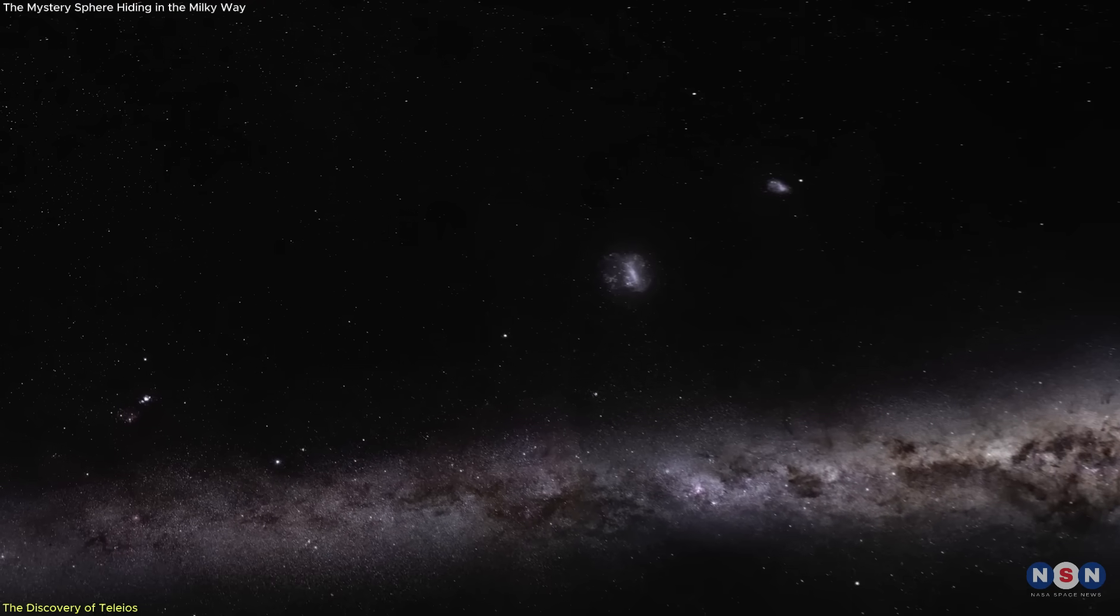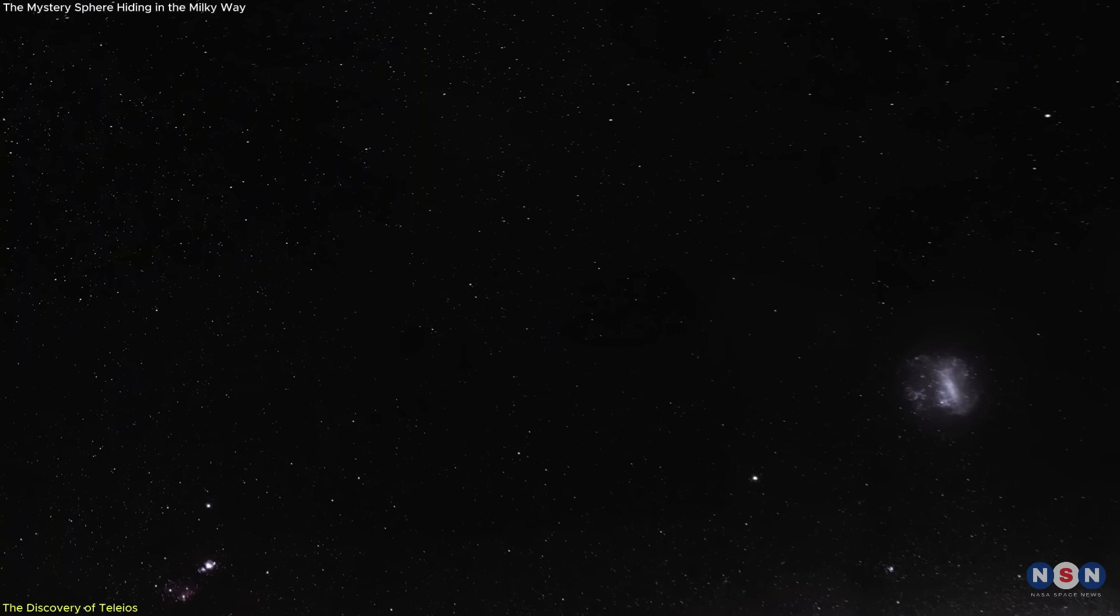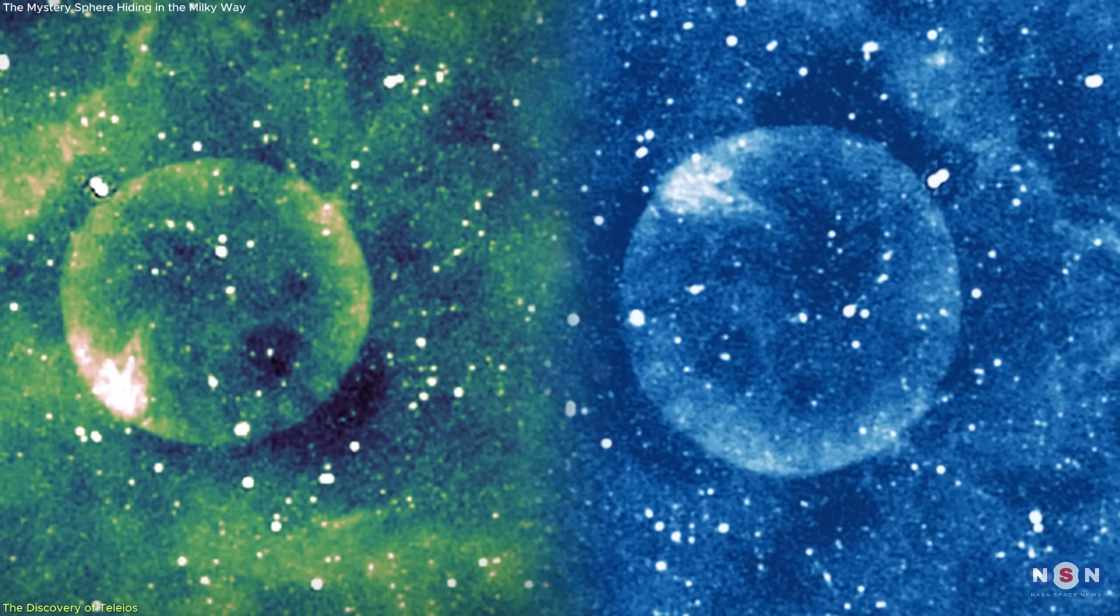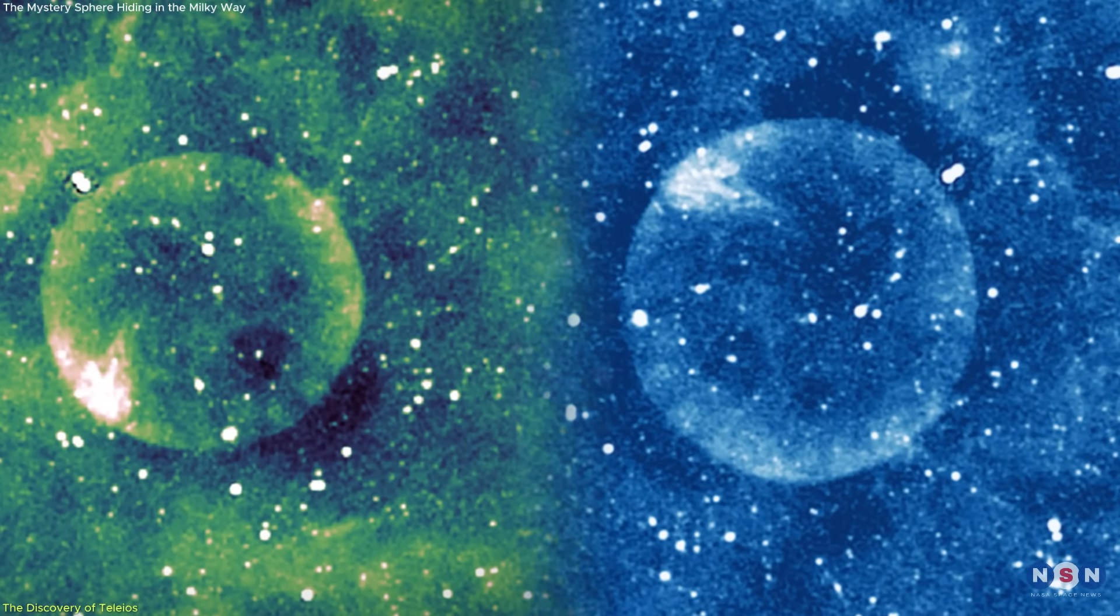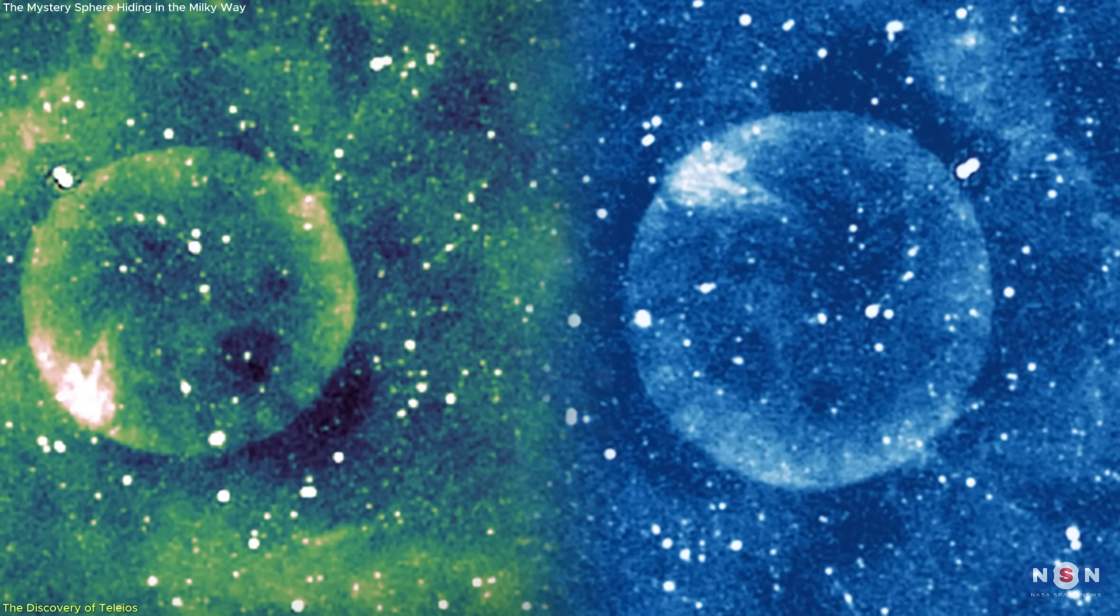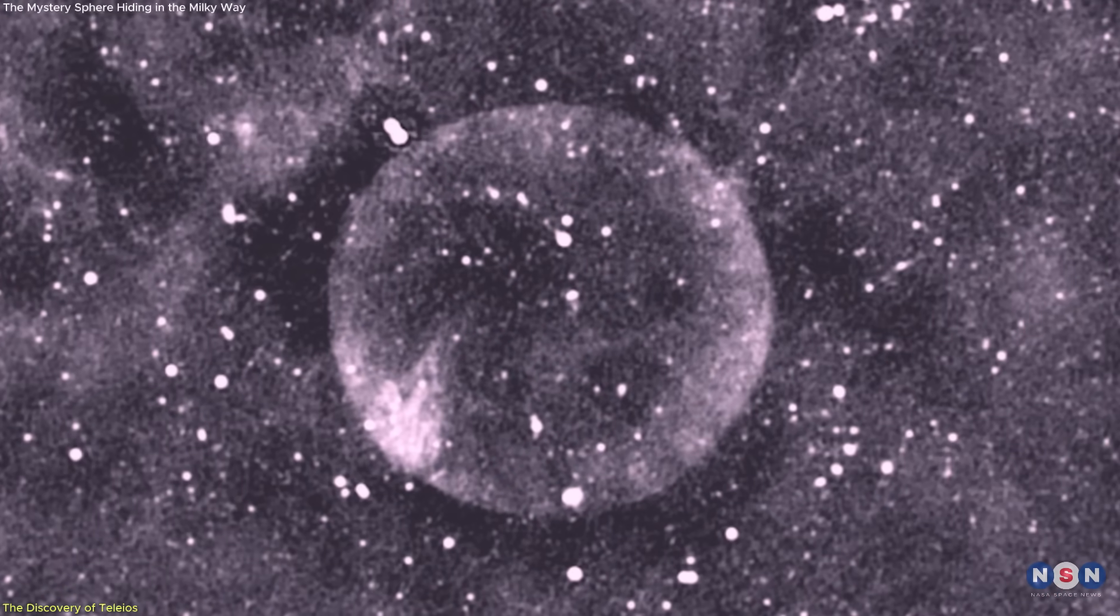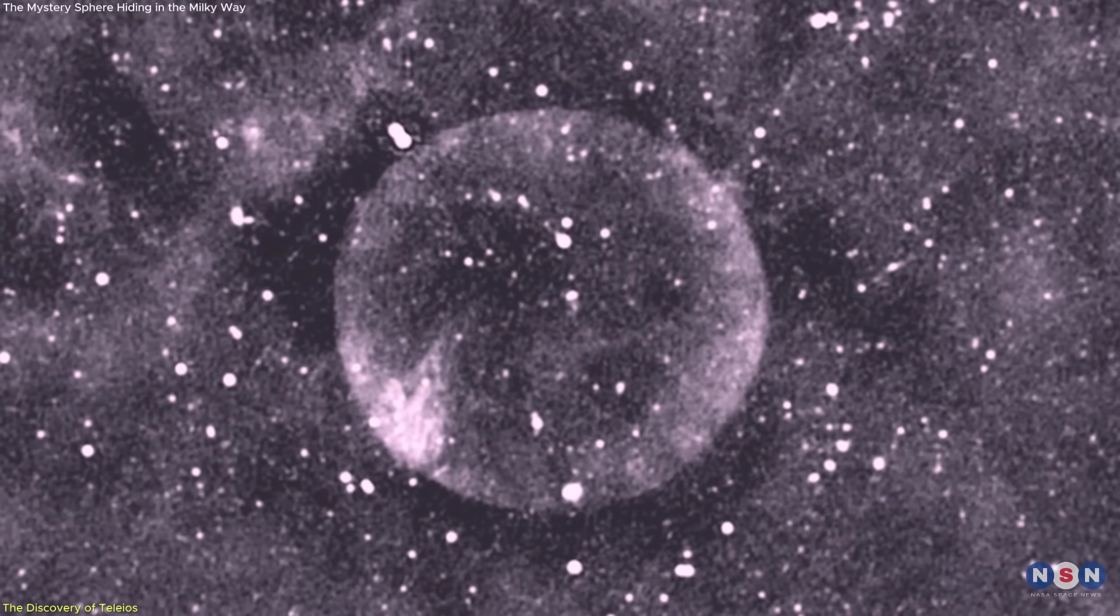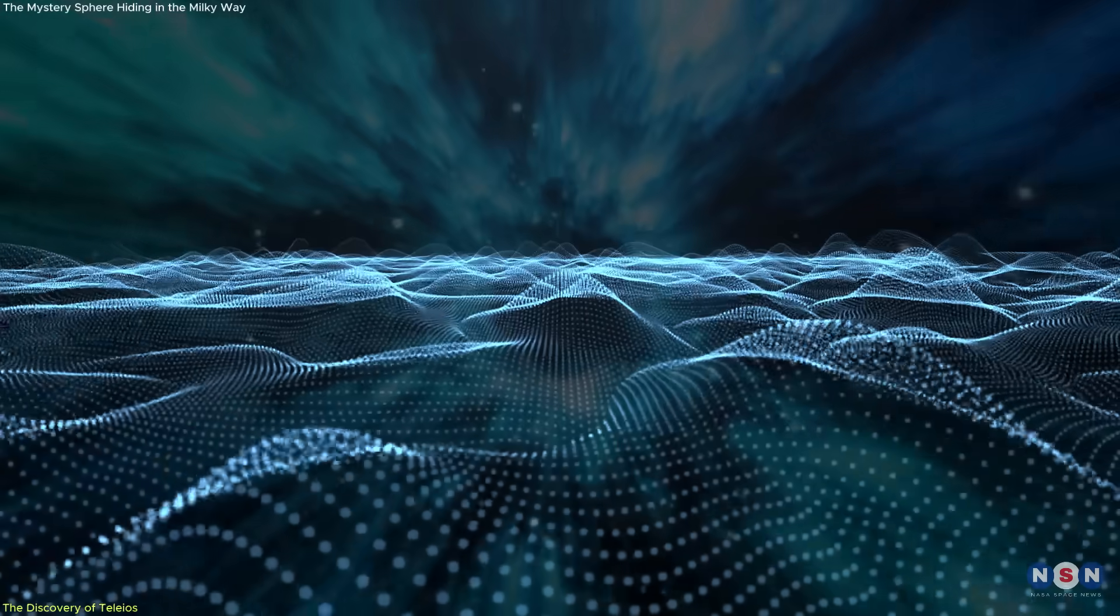Depending on how far away it lies, somewhere between 7,000 and 25,000 light years, its size could range from 46 to 157 light years across. But no matter the distance, the shape remains stunningly intact, and it gets stranger.